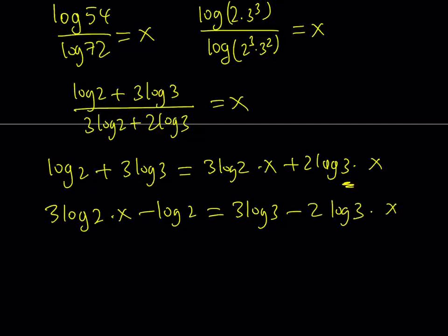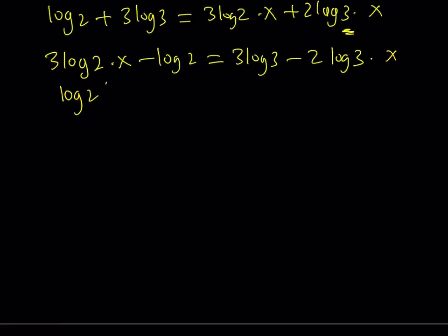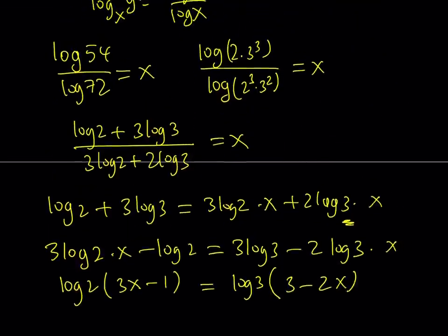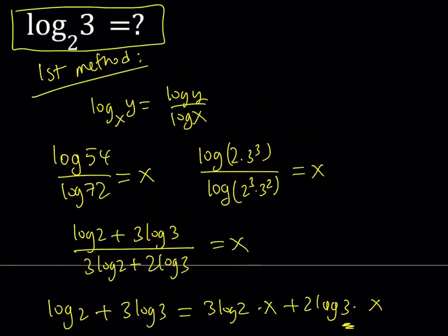Okay and then I'll be taking out a log 2 here so I'll use factoring. This is going to give me log 2 multiplied by the quantity 3x minus 1 equals log 3 factored out 3 minus 2x. And from here I want to get log 3 over log 2 as opposed to log 2 over log 3 because if you use the change of base here this is going to be equivalent to log 3 over log 2. That's what I'm trying to get.